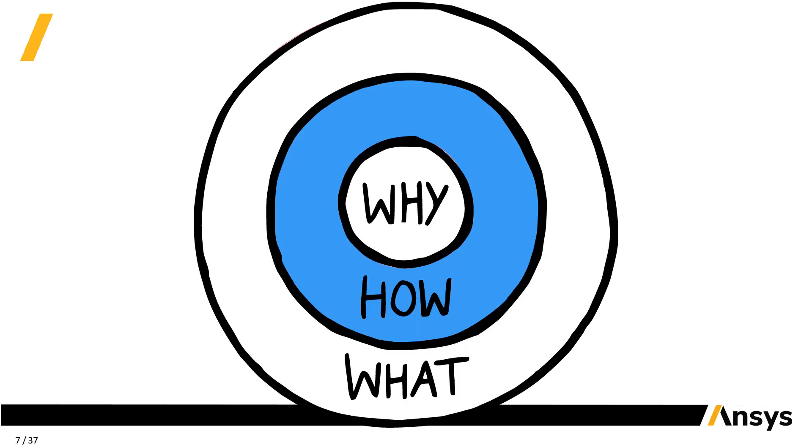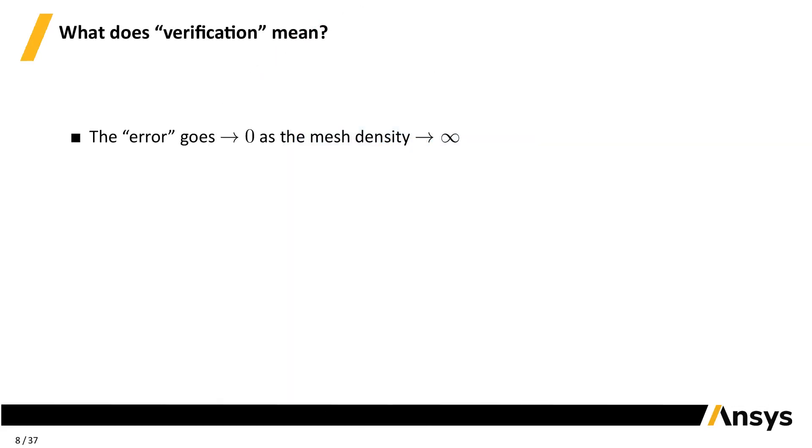How? The right way to do it is to show that the error—that is to say, the difference between the exact solution and the solution our code gives—tends to zero as the mesh size tends to zero as well. Mathematically, this concept is convergence.